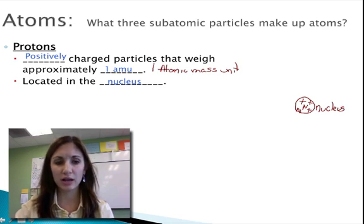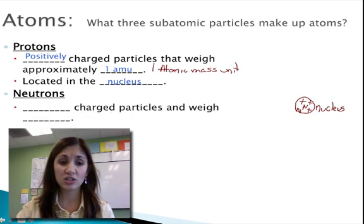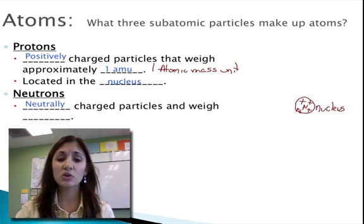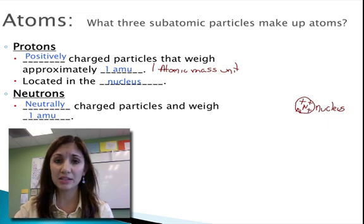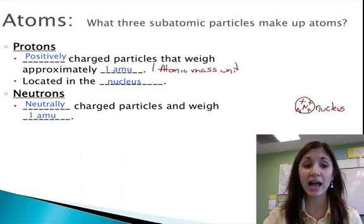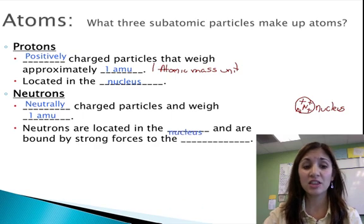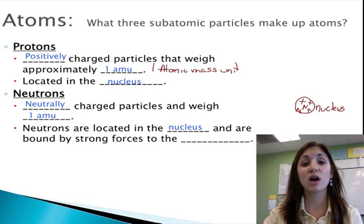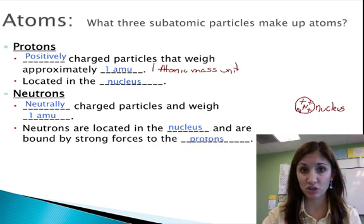Now neutrons, on the other hand, are neutrally charged. They don't have a charge. And they also weigh one atomic mass unit. That is, protons and neutrons added together yield the atomic mass of any particular atom. These are also located in the nucleus, and they're bound. They're stuck there by strong forces really binding them to those protons.